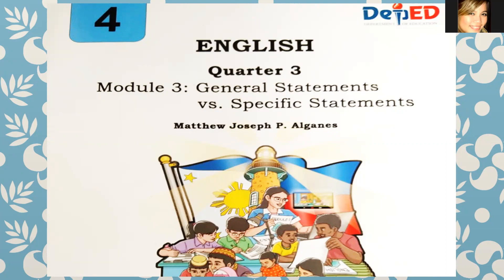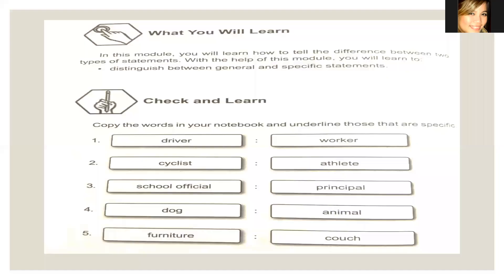Let's turn to the next page. For our first page, go directly to Roman number six — that's the VI in your modules. We have there what you will learn. In this module, you will learn how to tell the difference between two types of statement. With the help of this module, you will learn to distinguish between general and specific.